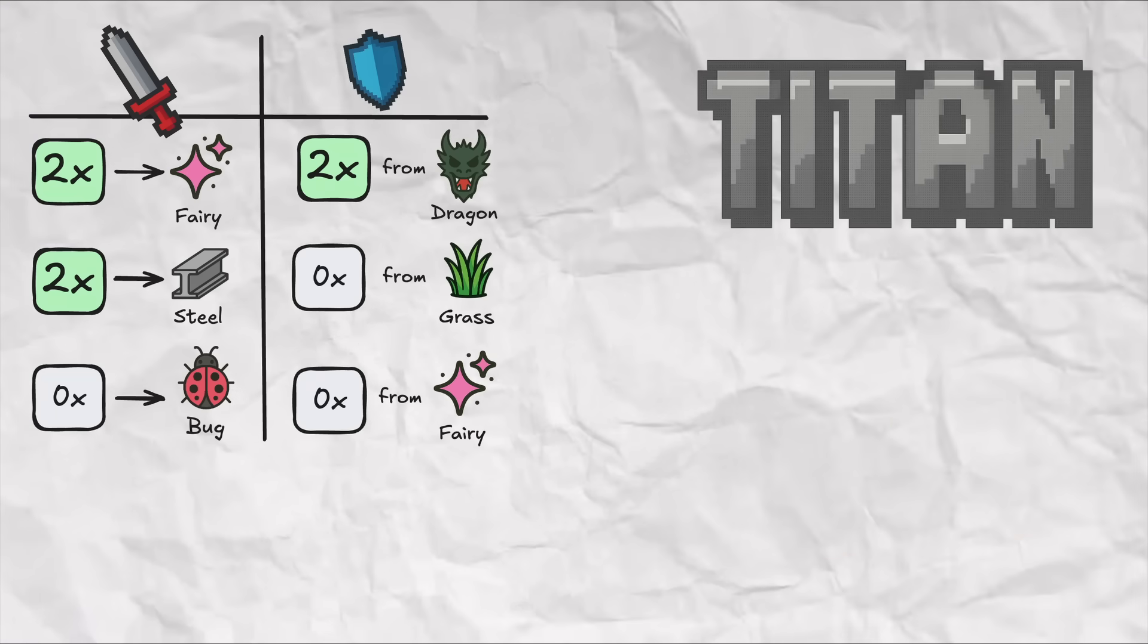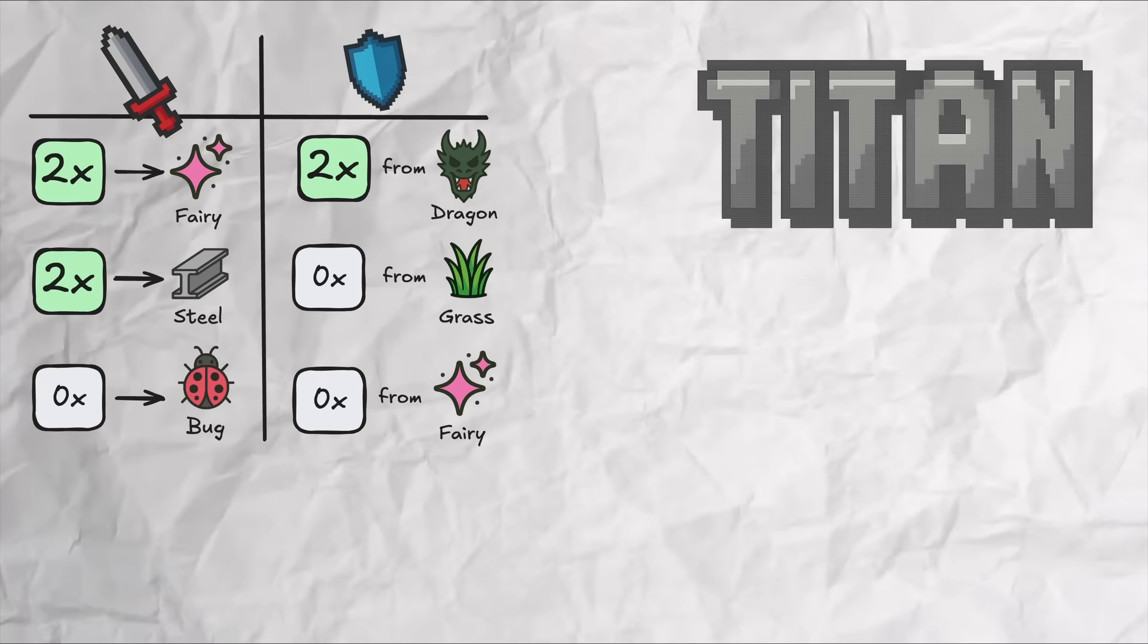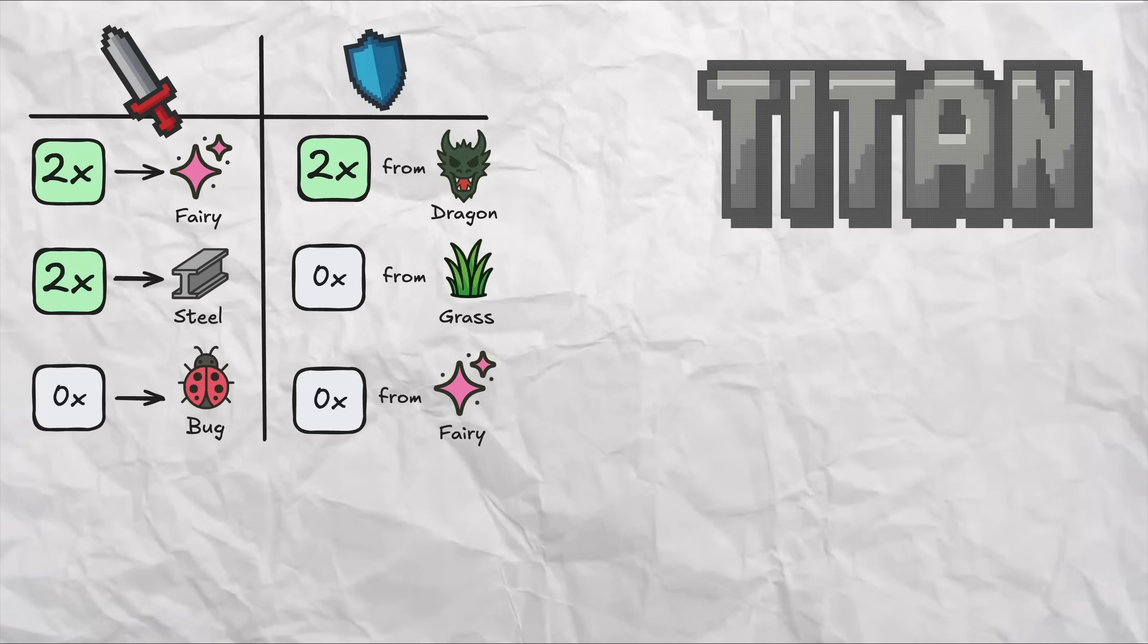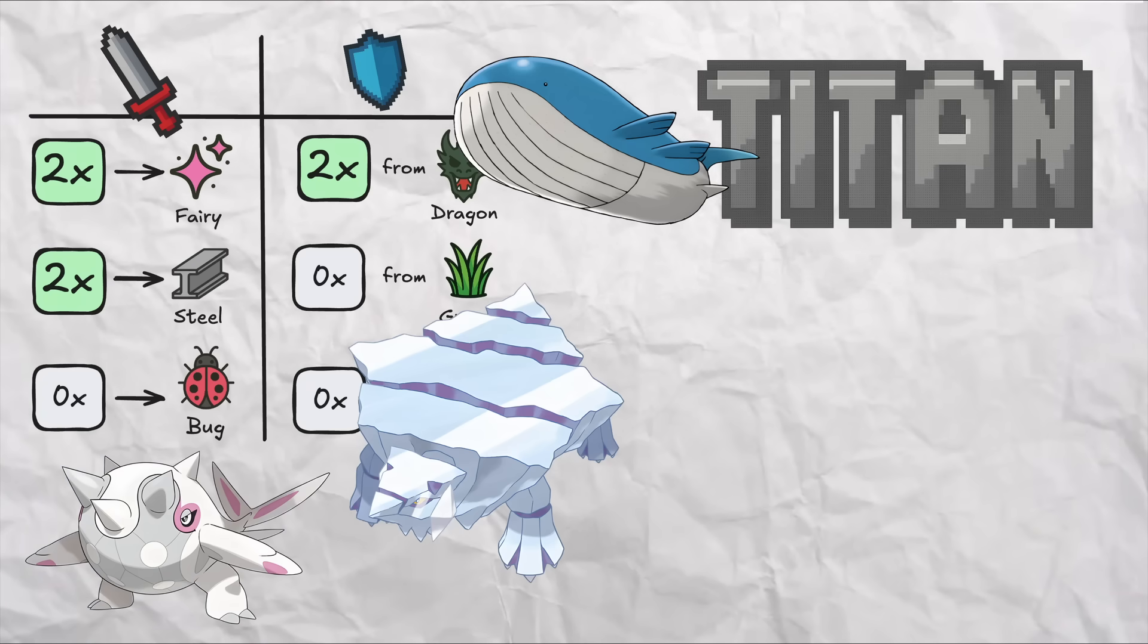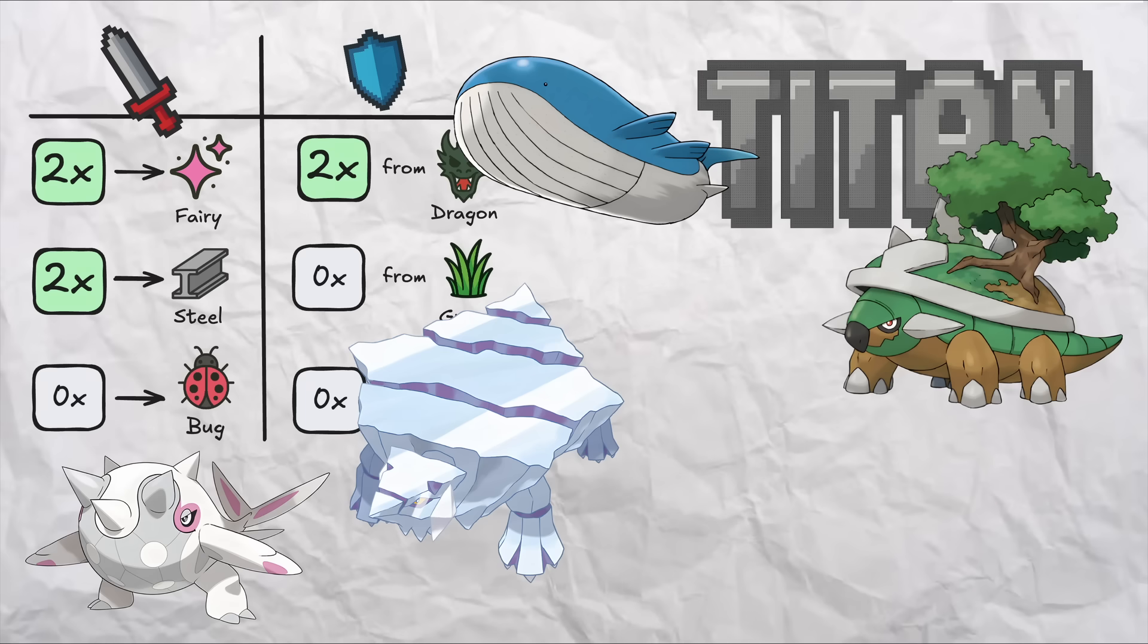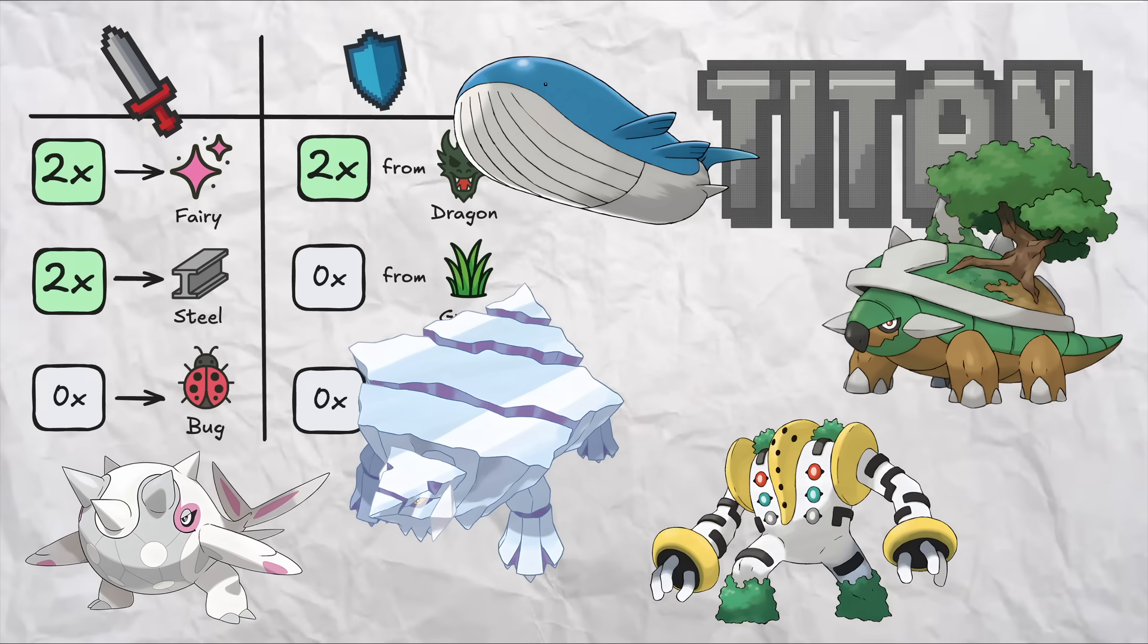I like this type because it works really well as a secondary type on a lot of existing Pokémon. Like I could see Cetitan and Avalugg being Ice Titan types, could see Wailord being a Water Titan type, Torterra being a Grass Titan type, Regigigas being a normal Titan type, etc.